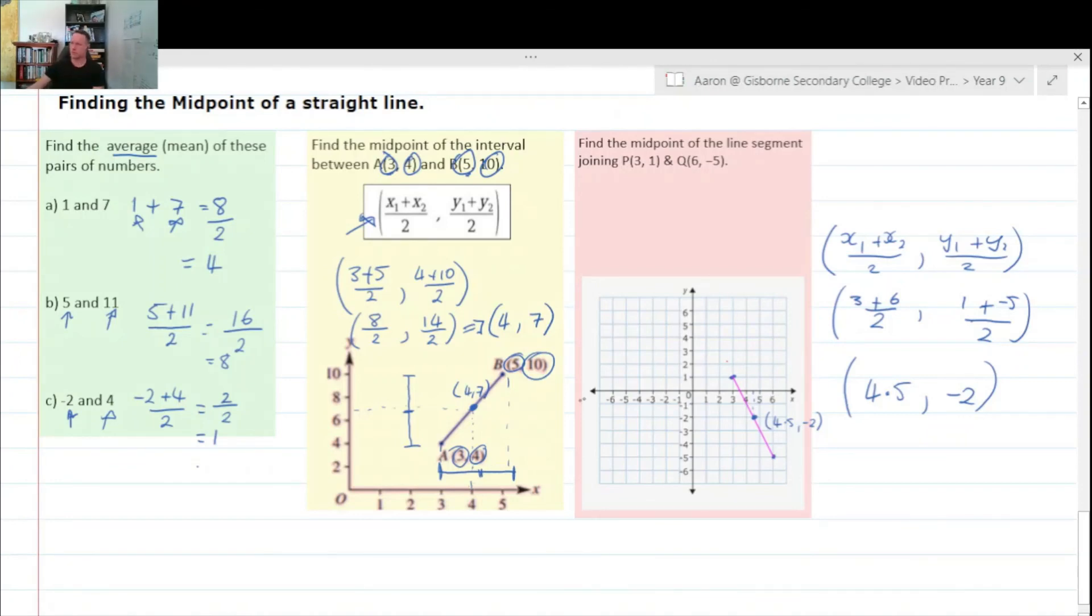Label them if you have to. So up here I might like to go x1 and y1. I always have to make my commas really big in this, otherwise it looks like another 1. And then x2, y2. If it helps you do.